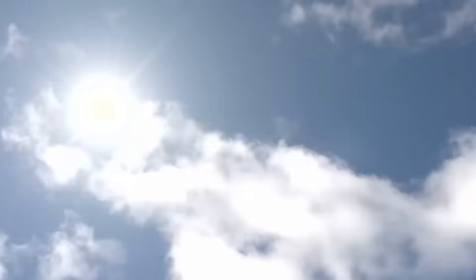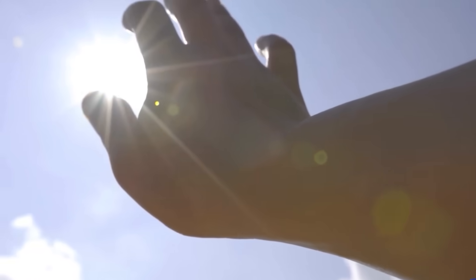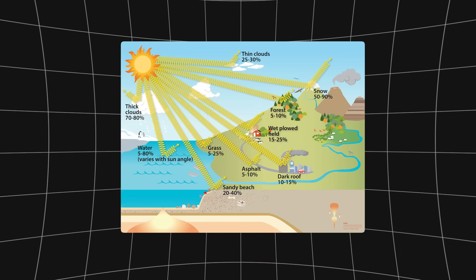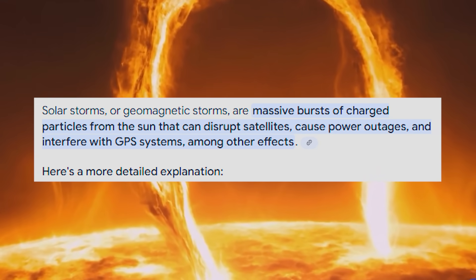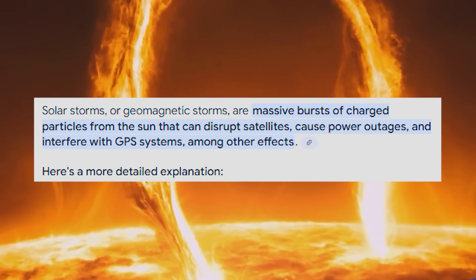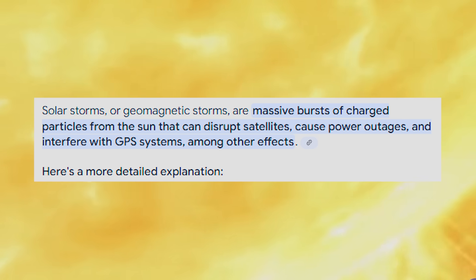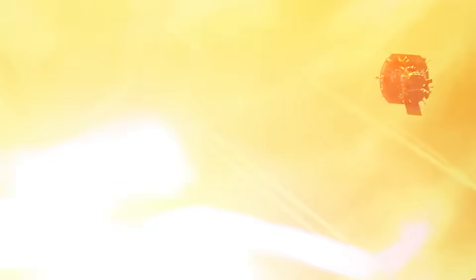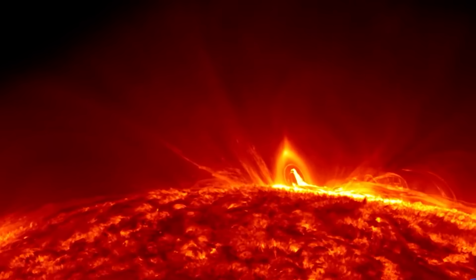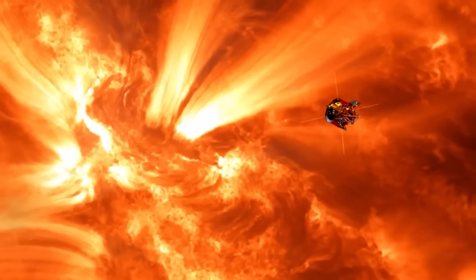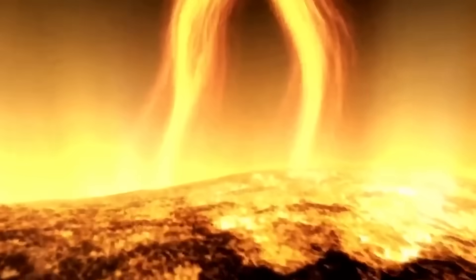But understanding the sun is about more than just scientific curiosity. The sun's energy impacts life on Earth in ways we still don't fully understand. Solar storms, massive bursts of charged particles, can disrupt satellites, knock out power grids, and even affect the climate. The Parker Solar Probe is giving us data that could one day help predict these storms before they reach Earth. But no one expected the probe to uncover what scientists just found inside the sun's corona.